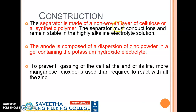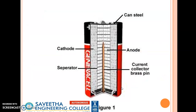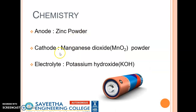The separator is made of a non-woven layer of cellulose or a synthetic polymer, and must conduct ions while remaining stable in highly alkaline electrolyte solution. The anode is composed of a dispersion of zinc powder in a gel containing the potassium hydroxide electrolyte, which prevents gassing of the cell at end of life. More manganese dioxide must be taken than required to react with all the zinc. Components are: anode — zinc powder; cathode — manganese dioxide powder; electrolyte — potassium hydroxide; current collector — brass pin; outer casing — steel can.